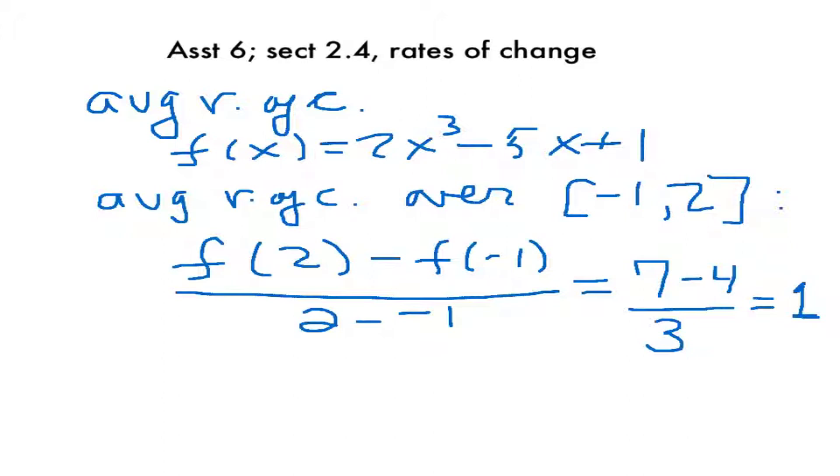So the average rate of change of the function 2x³ - 5x + 1 over the specific interval -1 to 2 is simply 1. And that's all there is to that particular point.